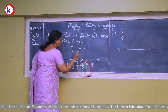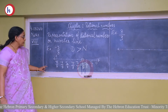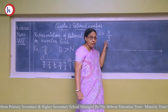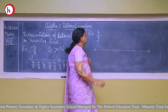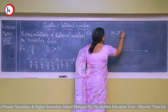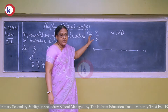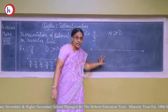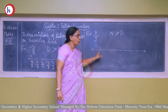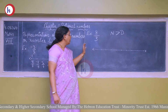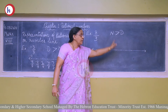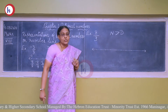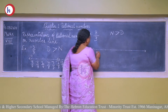So the rational number minus 3 upon 8 can be represented on the number line. Now in the second case, another example: 8 upon 3. In 8 upon 3 you can see that the numerator is greater than the denominator. The number line will be divided into 3 equal parts, and all these equal parts will be on the right side of zero because 8 upon 3 is a positive rational number.